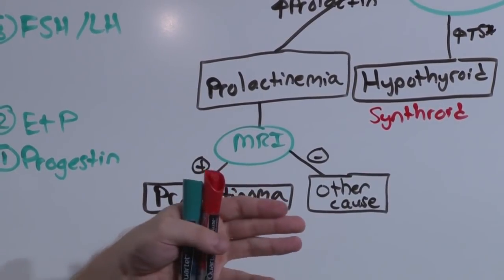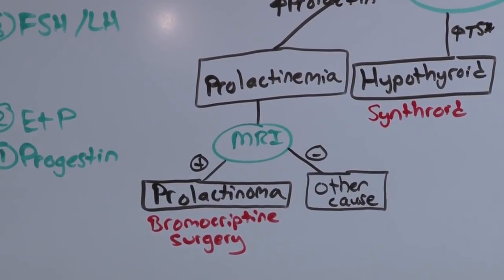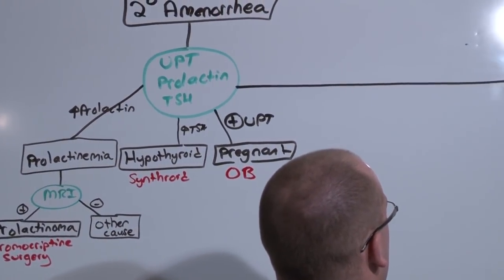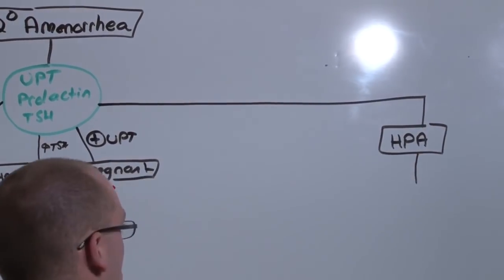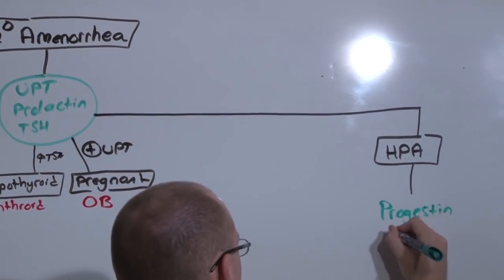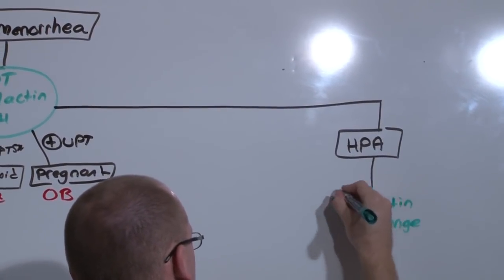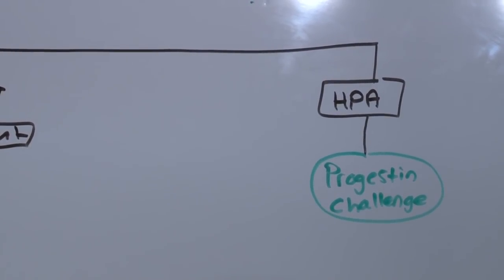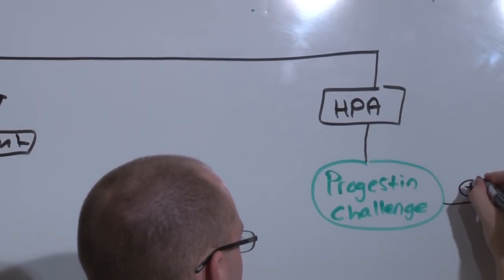And let's presume you've looked over their medications, so you know that's not it. Now you have to begin accessing the axis. Let's assess the HP axis. And you do that first with the Progestin Challenge. You ask, is the endometrium already developed? Has it already proliferated and is just waiting for the signal to bleed?